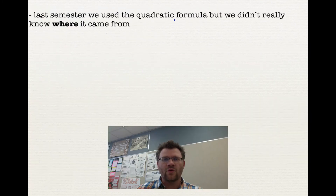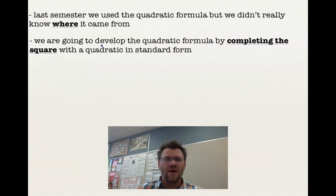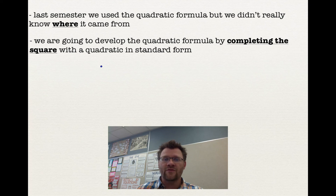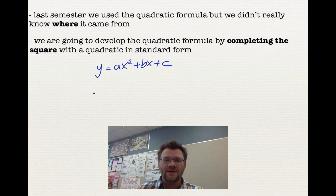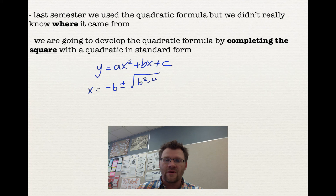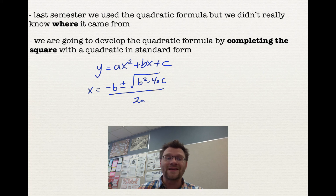Last semester we used the quadratic formula but didn't really know where it came from, so today we're going to develop it by completing the square. A quadratic in standard form looks like ax² + bx + c, and the quadratic formula is x = (−b ± √(b² − 4ac)) / 2a. We're going to get from standard form to the quadratic formula in about seven or eight steps using completing the square.